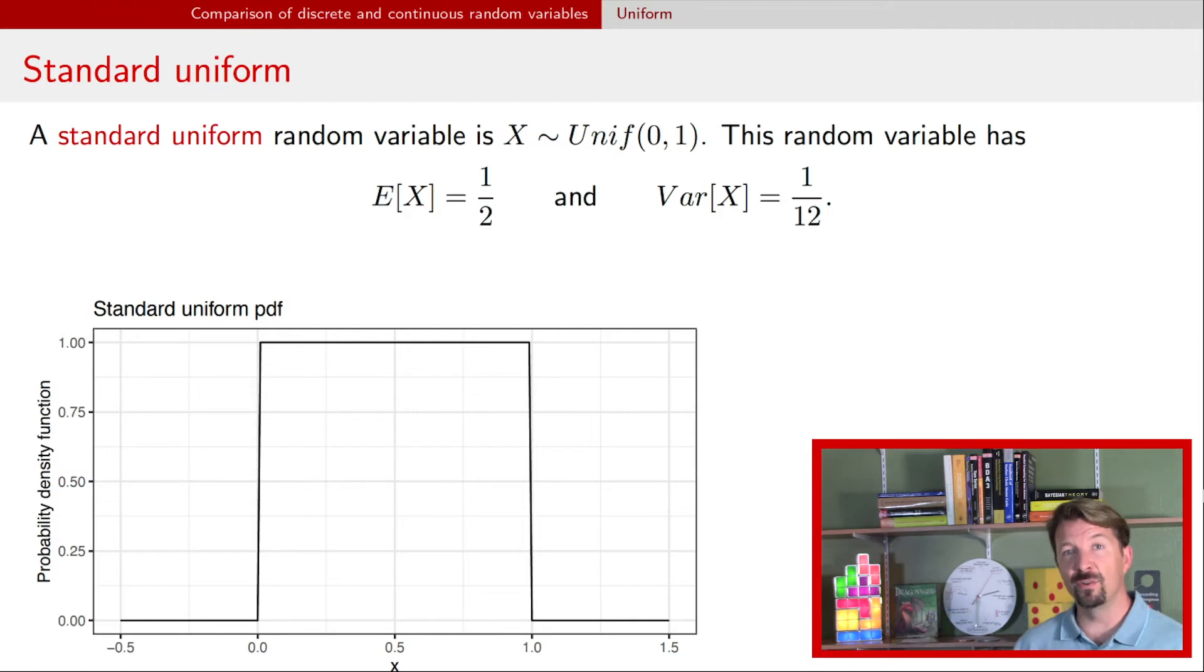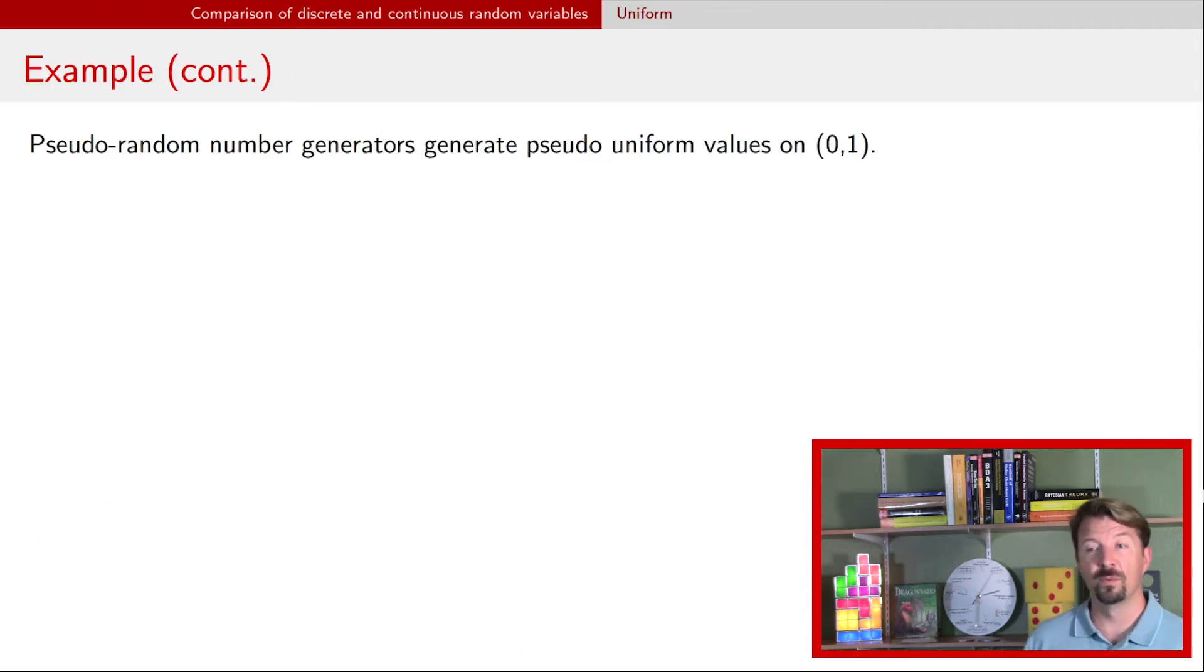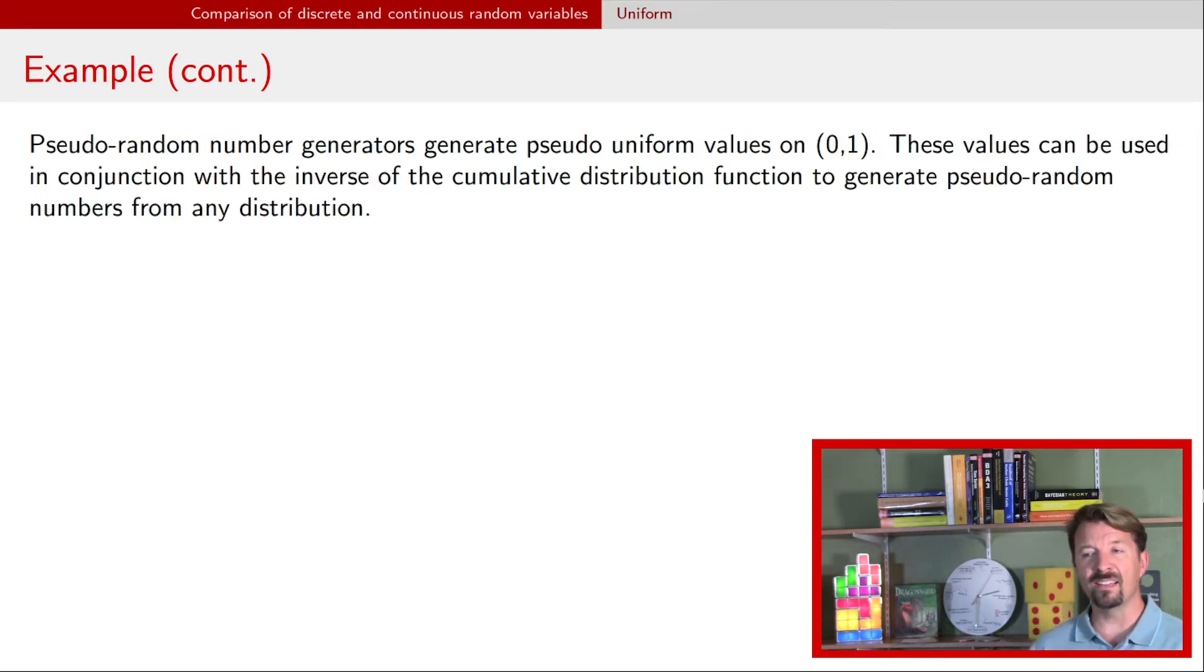But this standard uniform has a huge amount of uses. In particular, pseudorandom number generators on computers are designed typically to take on values on this standard uniform scale, that is between zero and one. On this slide I'm going to provide an example usage of pseudorandom variables to draw from almost any distribution you could think of. We can use something called the inverse cumulative distribution function in order to generate these pseudorandom numbers.